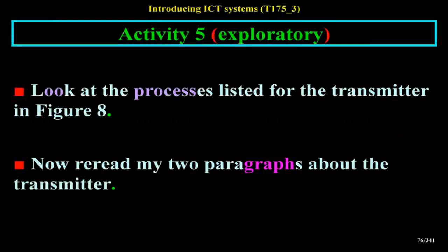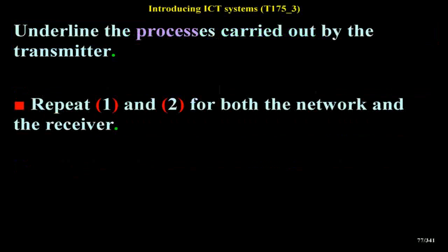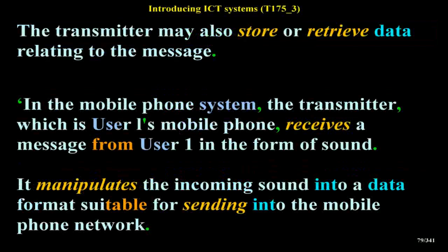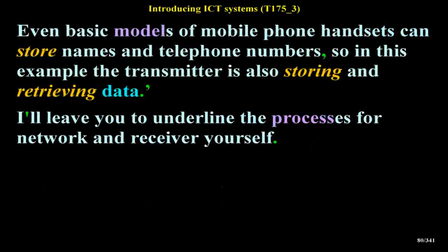Activity 5 Exploratory: Look at the processes listed for the transmitter in Figure 8. Reread the two paragraphs about the transmitter and underline the processes carried out by the transmitter. Repeat for both the network and the receiver. Discussion: The transmitter receives a message from user 1 and manipulates it into data which can be sent into the network. The transmitter may also store or retrieve data relating to the message. It manipulates the incoming sound into a data format suitable for sending into the mobile phone network, and is also storing and retrieving data.